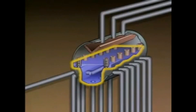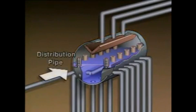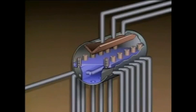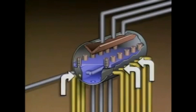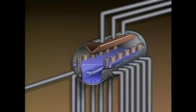The bottom part of the drum contains water to be circulated back through the boiler. The top part of the drum is used to collect steam. Heated feed water is fed into the drum through a distribution pipe. The drum is usually kept about half full of water. In this example, the mixture of water and steam that returns to the drum from the water walls is directed against baffles called drum shrouds that run the length of the drum.